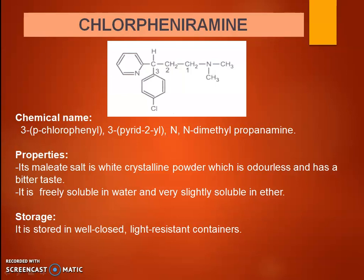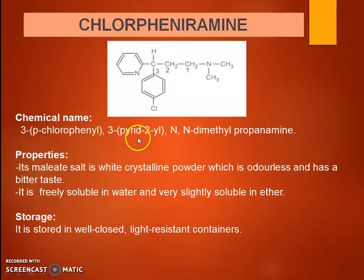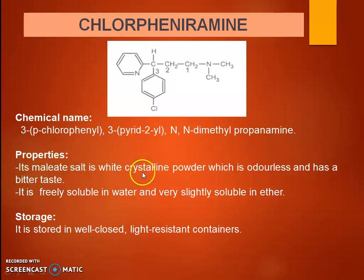Dosage form: pheniramine tablet. Brand names: Histole, Phenyl, and Diavil. Next drug is chlorpheniramine. This is the structure of chlorpheniramine. It is 3-(para-chlorophenyl)-3-(pyrid-2-yl)-N,N-dimethylpropylamine. Properties: its maleate salt is a white crystalline powder, odorless and with a bitter taste.